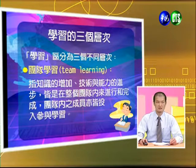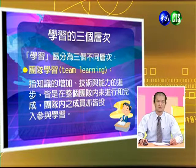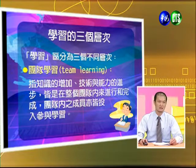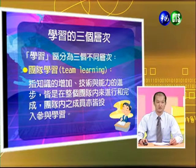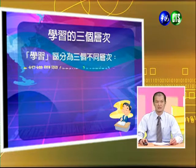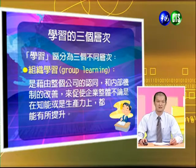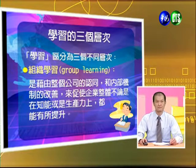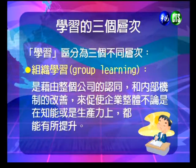學習有三個不同的層次。第一個是個人學習，指個人經由自我學習、觀察或技術性指導，來改變其技能、態度、價值和洞察力的過程。第二個是團隊學習，知識的增加、技術與能力的進步，都是在整個團隊裡面進行和完成的，團隊成員也都投入整個學習過程。第三個層次是組織學習，藉由整個公司的認同和內部機制的改善，促使企業整體在智能和生產力上都有所提升。